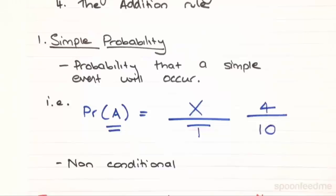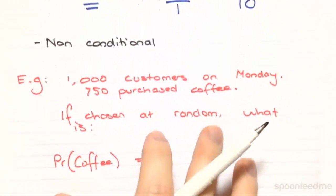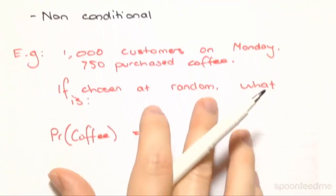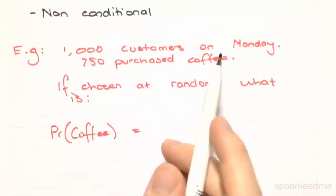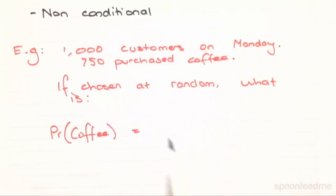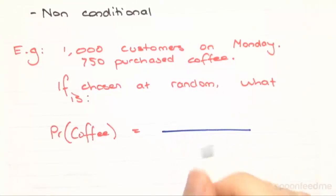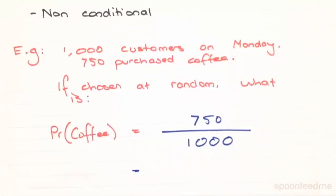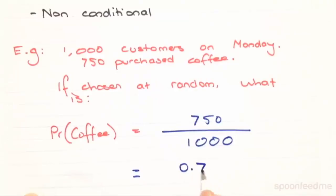Simple probability is non-conditional. For example, say we have 1,000 customers on Monday at a coffee shop and 750 of those purchased coffee. If chosen at random, what would be the probability of somebody purchasing a coffee? The total number of customers in the sample is 1,000, with 750 purchasing coffee. So the probability is 750 divided by 1,000, which gives us a probability of 0.75 — a 75% probability that if somebody was chosen at random on Monday, they would have purchased a coffee.